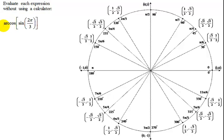So now I have to find the arc cosine, or remember that's the same as the inverse cosine of the sine of 2π over 3. So let's look at finding the sine of 2π over 3 to start with.